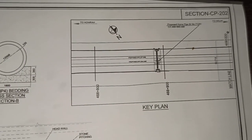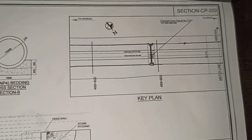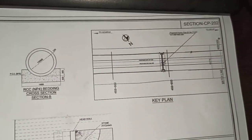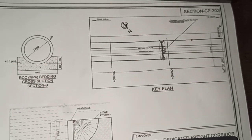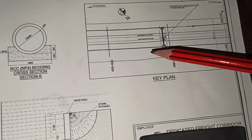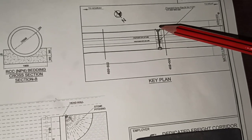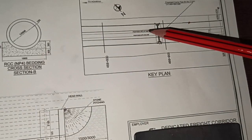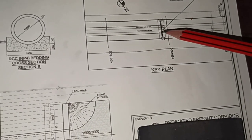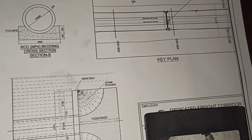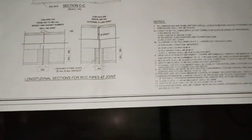After that we have a key plan showing the overall arrangement — the pipe starts here and runs across the track below the formation, with the tracks shown on both sides.